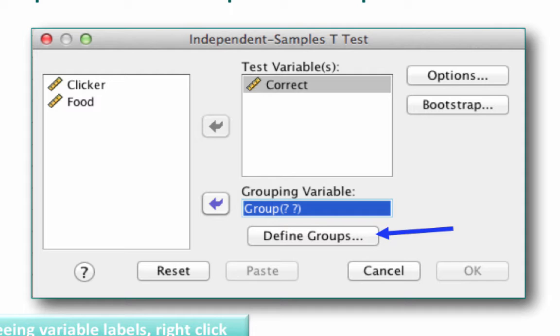Now by the way, if you're seeing variable labels instead of the words like clicker, food, and correct, just right-click on any of those variable names and choose show variable names. If you're on a Mac, control click and choose show variable names.